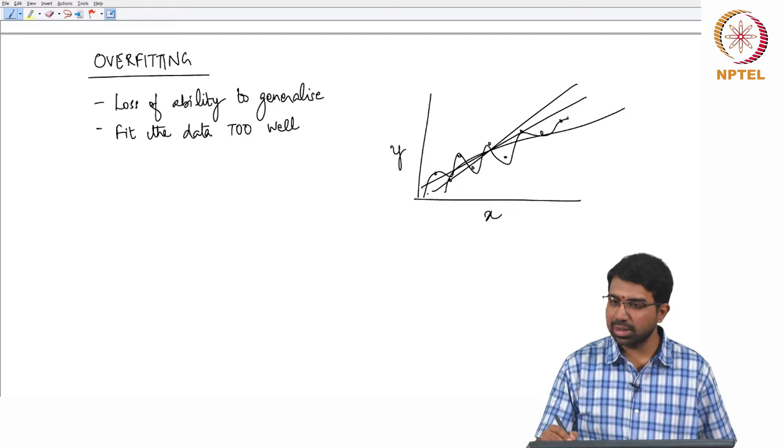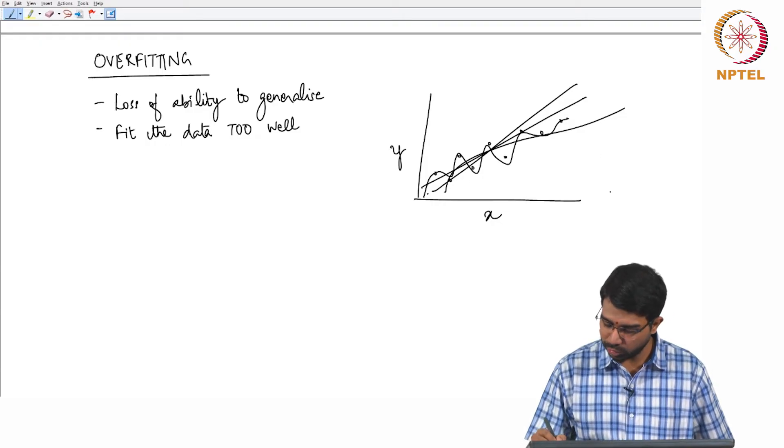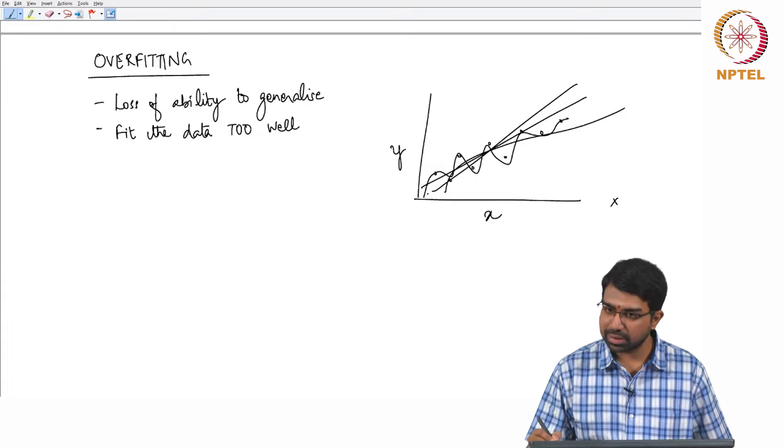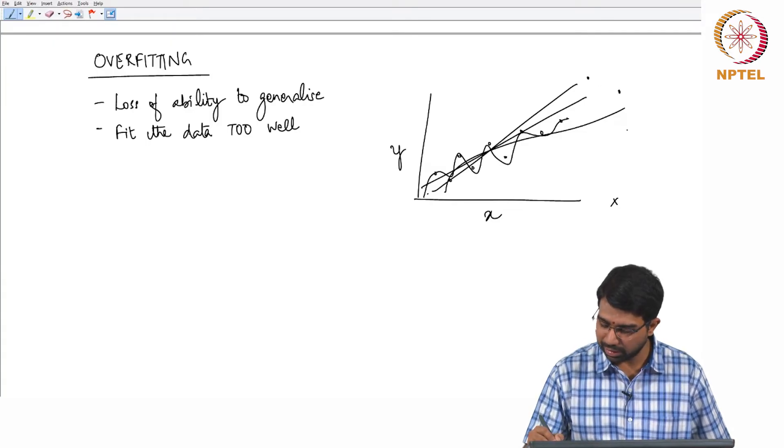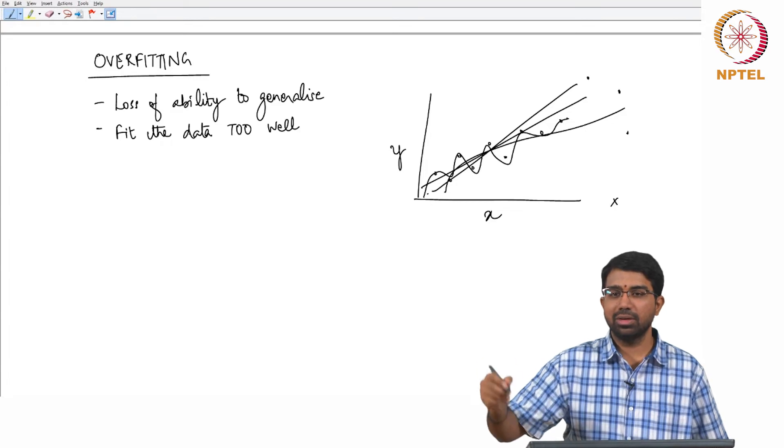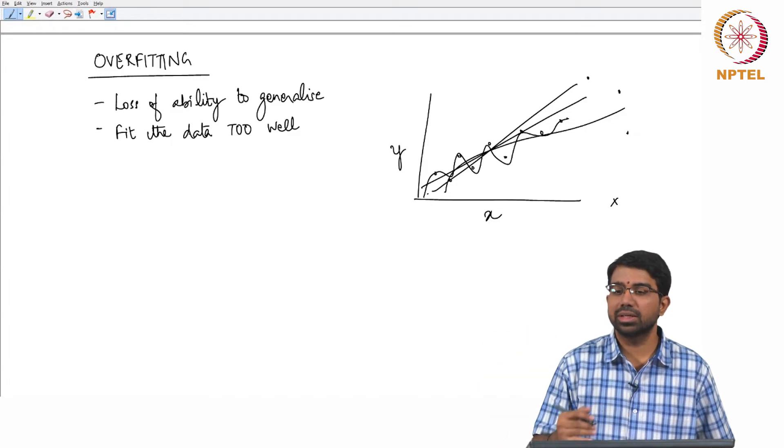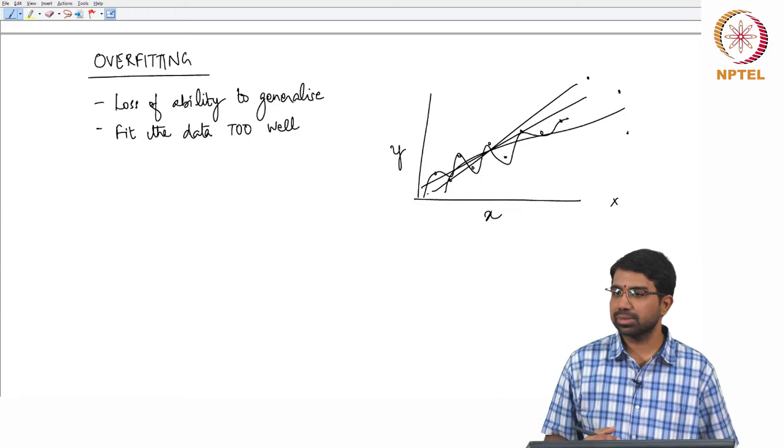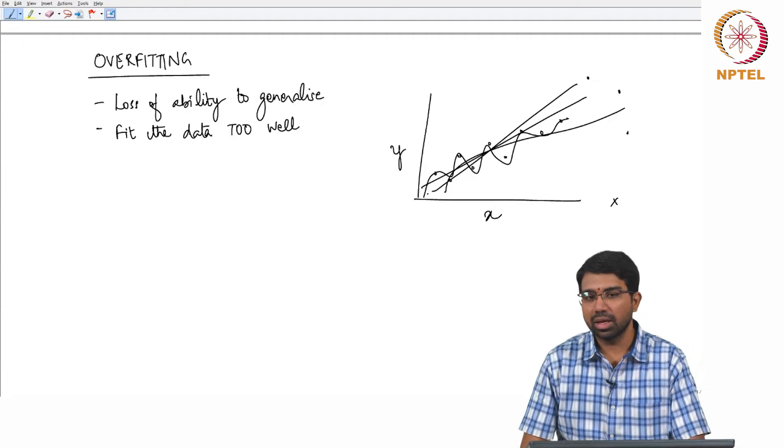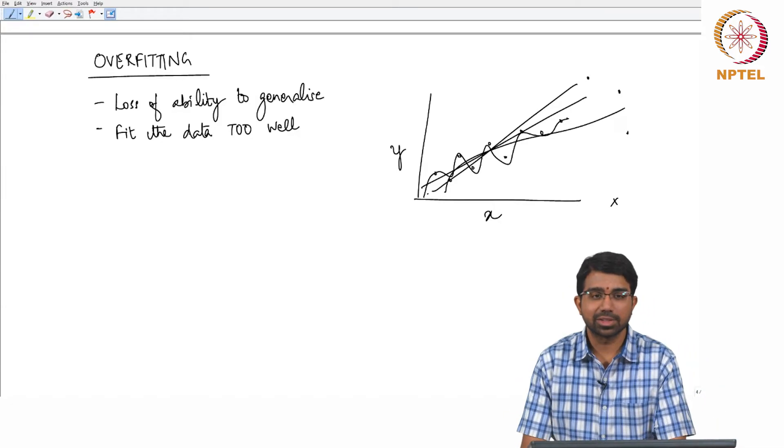So the problem with this model is that it perfectly reproduces the original data but it might really, so when I get a new point. So for this x, I might have to predict this y but this might predict something here or something here depending upon how it has been fluctuating. So you have memorized the noise in the data set as well instead of just the trend in the data set.